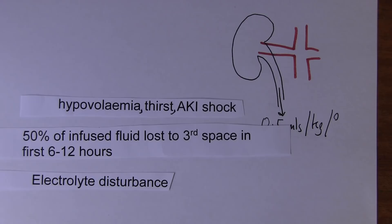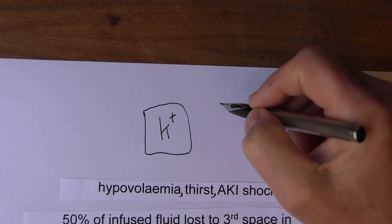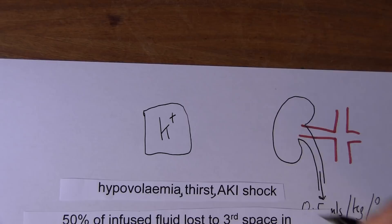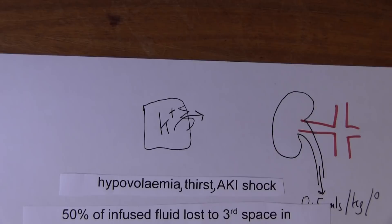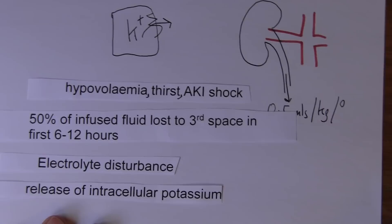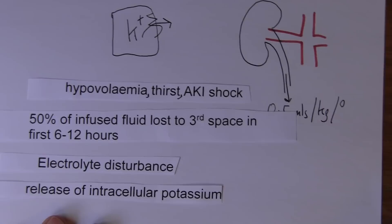When there's injury, inside cells there's a lot of potassium — normal serum levels of potassium are 3.5 to 5 millimoles, relatively low, but inside cells there's a lot. So when cells are injured and the cell wall is disrupted, that potassium can get out. We get movement of potassium from the intracellular space to the extracellular space — release of intracellular potassium. This can lead to hyperkalemia, and rapid changes in potassium are life-threatening; they can cause ventricular fibrillation, for example.